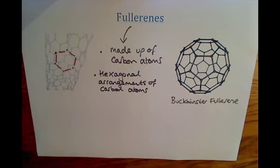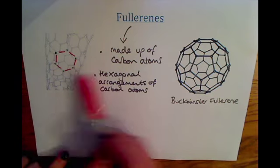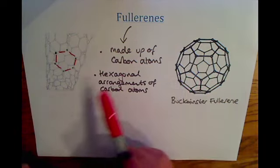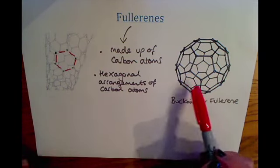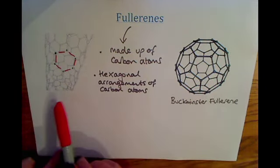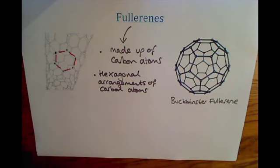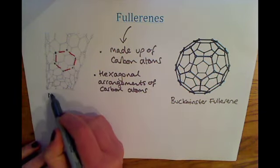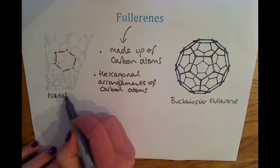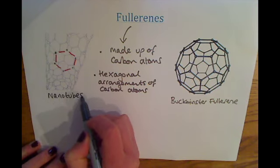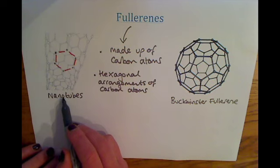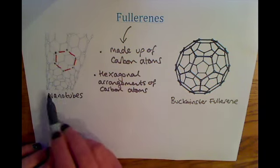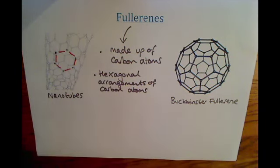These fullerenes have some useful properties. You can see that they form cage structures — we have the Buckminster fullerene, and this other one is just part of a much longer tube, and we call these nanotubes. The term 'nano' refers to the diameter of the tube being very, very small.